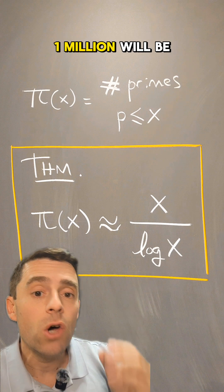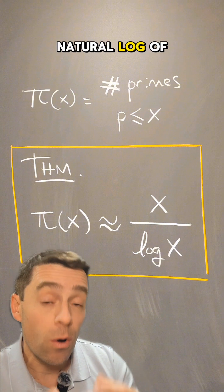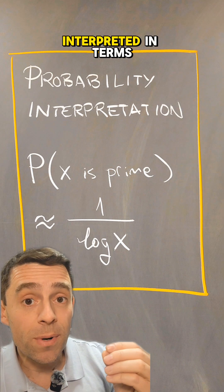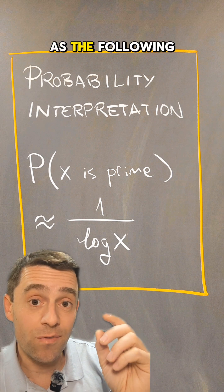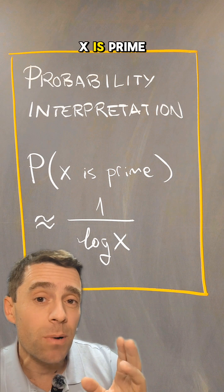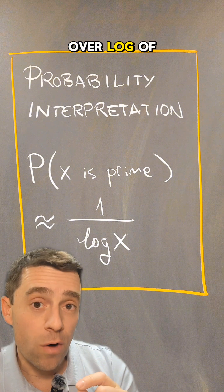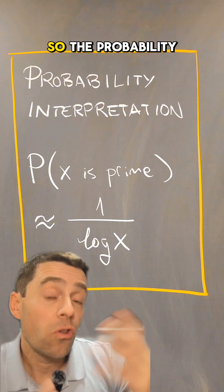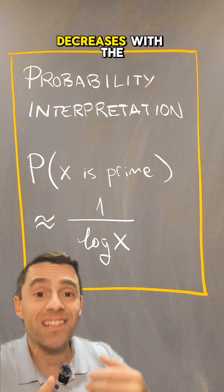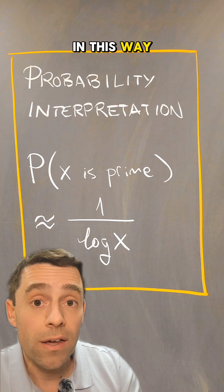So pi of a million will be about a million divided by the natural log of a million. The prime number theorem can be interpreted in terms of probability as the following statement: the probability that x is prime is about 1 over log of x. So the probability that a larger and larger number is prime decreases with the size of the number in this way.